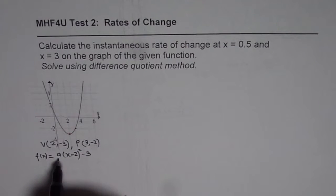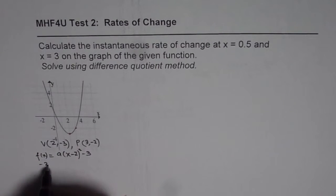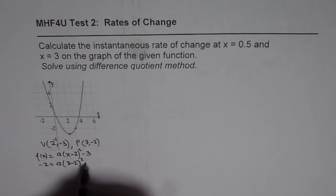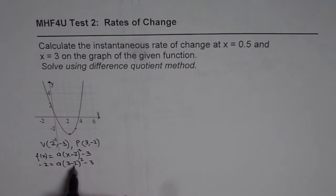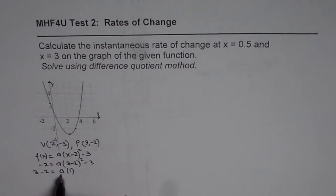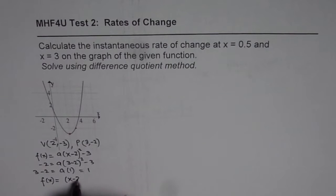To get 'a' we'll use the point (3, -2): so -2 equals a times (3 minus 2) squared minus 3. Since 3 minus 2 is 1, bringing -3 to the right side gives us 3 minus 2 equals a, so a equals 1. We get the equation of the graph as f(x) equals (x minus 2) squared minus 3.